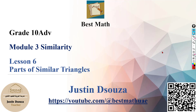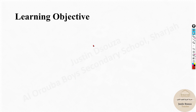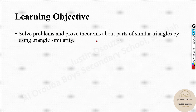Hello everyone, I hope you all are doing great. Welcome to the sixth lesson in module 3. The module is about similarities, and now we will learn about the parts of similar triangles — that means the triangles are already similar and we will look into the parts in various conditions. The learning objective is to solve problems and prove theorems about the parts of similar triangles by using triangle similarity.